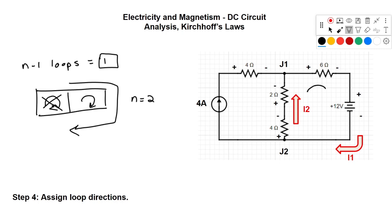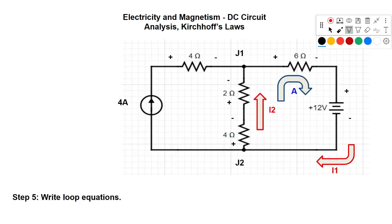We only need to pick one loop — either the outer loop or the right-hand loop. Personally, I always choose the interior loop; it just seems easier. We'll call this loop A. Now we have our one loop, all currents labeled, and all terminals labeled on everything.